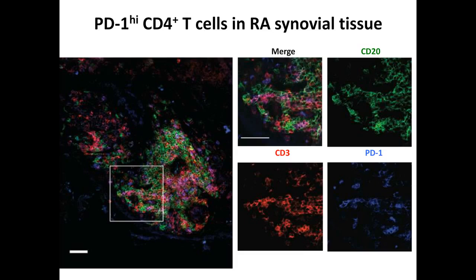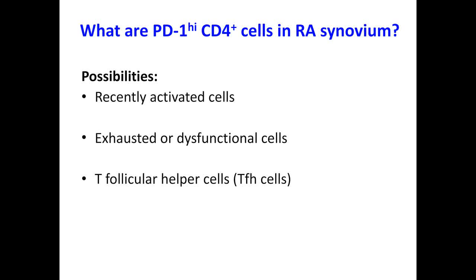As another complementary approach, we used immunofluorescence microscopy to detect these cells within tissue and learn about their localization. Confocal microscopy of a synovial biopsy sample shows an aggregate of immune cells: B cells in green, T cells in red, and PD-1-expressing T cells in blue. In the merge, there are a number of purple cells — PD-1-positive T cells — and they are often closely approximated to B cells in the sample. By three different approaches — CyTOF, flow cytometry, and immunofluorescence — we've identified a population of T cells with bright PD-1 expression within the synovium.